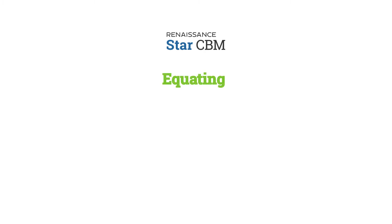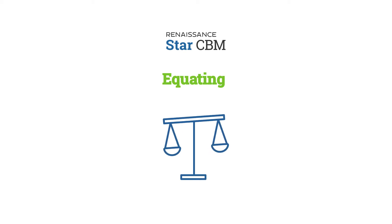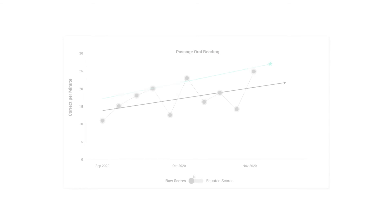STAR-CBM addresses this problem through a statistical process called equating — identifying easier and harder tasks and basically weighting their scores so that they become directly comparable.